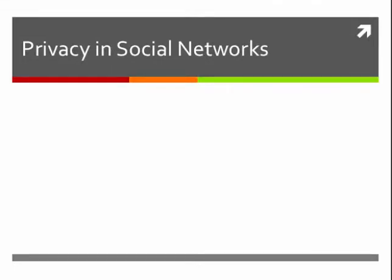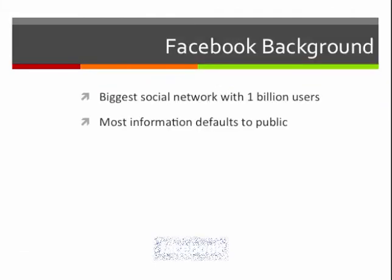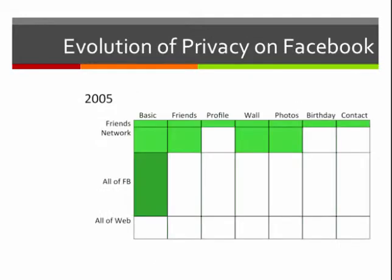In this lecture, we're going to discuss privacy and social networks. To do this, we'll particularly focus on Facebook as a starting place. It's the biggest social network out there with a billion users at this point. And most of the information on Facebook defaults to be public. What we're going to look at is something that you'll see in the book, but we'll actually talk through how privacy has evolved on Facebook.